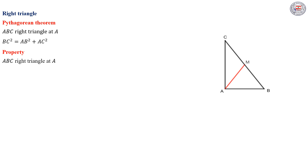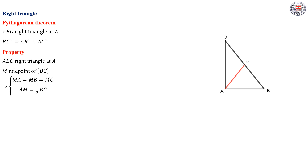Another property: if ABC is a right triangle at A, and M is the midpoint of BC, then we can deduce that MA is equal to MB and equal to MC. We can also deduce that AM is equal to half of BC.